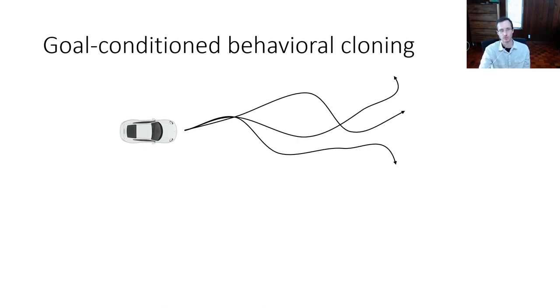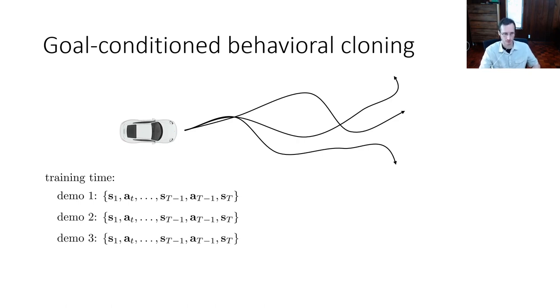So what you can do is something called goal-conditioned behavior cloning. At training time, you might receive a collection of trajectories where you're not even told what the expert is trying to do. They're just sequences of states and actions. And you assume that whatever the expert was doing was a good example for the state that they actually reached. So you say that, well, demo one is a good demo for reaching the state S capital T. Demo two is a good demo for reaching whatever state that reached.